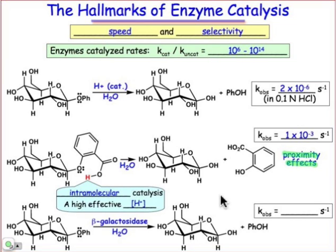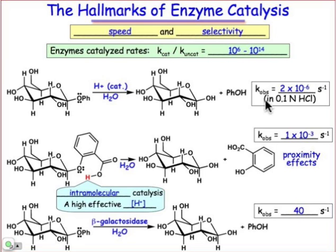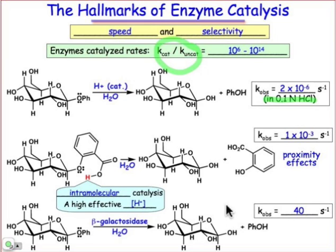So we've seen a thousand fold acceleration. What about the reaction when it's catalyzed by the enzyme β-galactosidase? In this case, we see almost a 2 million fold enhancement relative to the reaction conducted in the presence of 1.1 normal HCl. Clearly, the enzyme-catalyzed process can be very fast. We're looking at catalyzed processes throughout, so we're not comparing k-cat to k-uncat directly, but even so you can see accelerations that are more than a million fold.